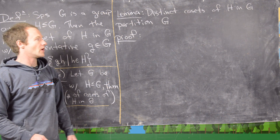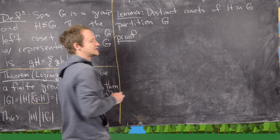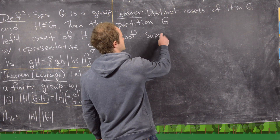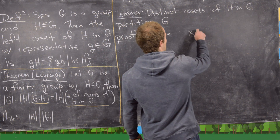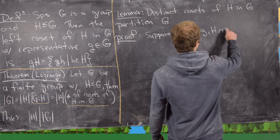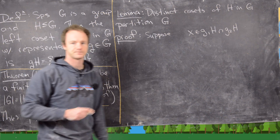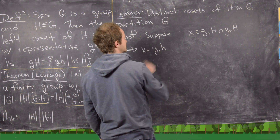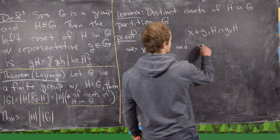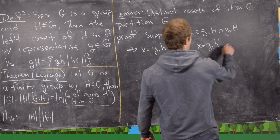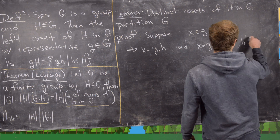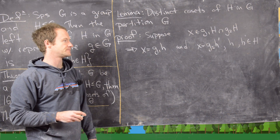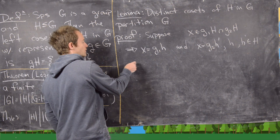Let's suppose we have an element x which is in the intersection of two cosets. This tells us that x can be written as g₁·h, and also x can be written as g₂·h′, for some h, h′ in H.